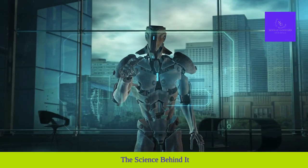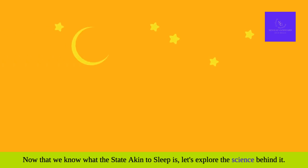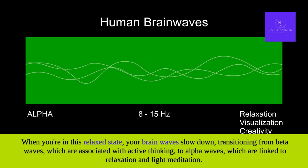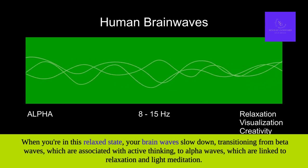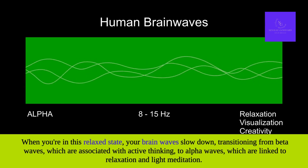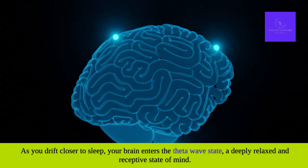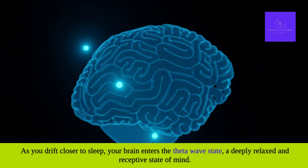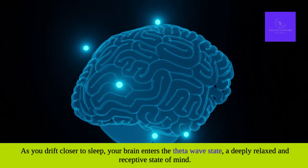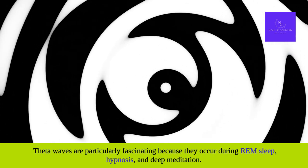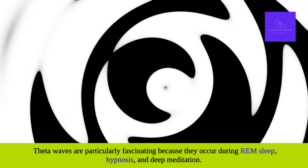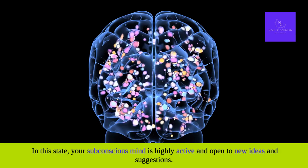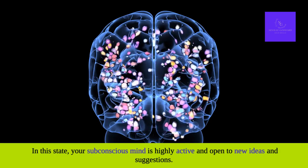Now that we know what the state akin to sleep is, let's explore the science behind it. When you're in this relaxed state, your brain waves slow down, transitioning from beta waves — associated with active thinking — to alpha waves, which are linked to relaxation and light meditation. As you drift closer to sleep, your brain enters the theta wave state, a deeply relaxed and receptive state of mind. Theta waves are particularly fascinating because they occur during REM sleep, hypnosis, and deep meditation.